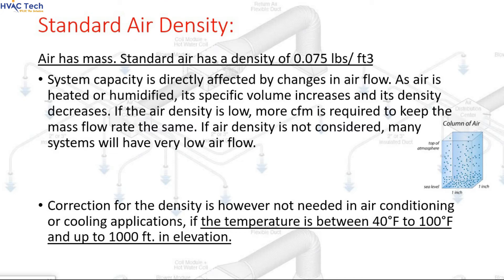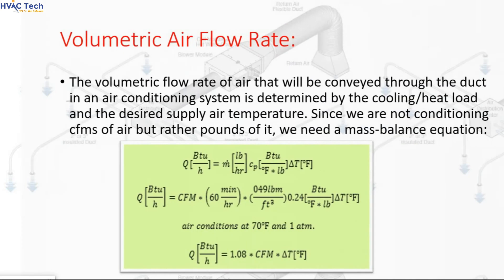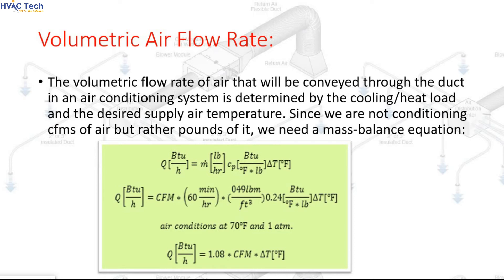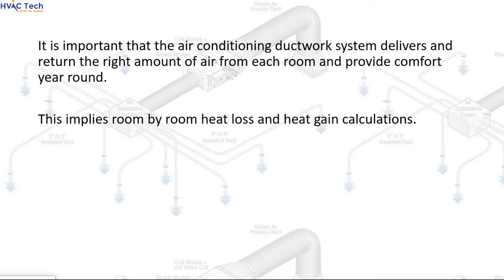Correction for density is not needed in air conditioning or cooling applications if the temperature is between 40°F and 100°F and up to 1,000 feet in elevation. The volumetric flow rate of air conveyed through the duct in an air conditioning system is determined by the cooling/heat load and the desired supply air temperature. Since we are not conditioning CFMs of air but rather pounds of it, we need a mass balance equation. It is important that the ductwork system delivers and returns the right amount of air from each room to provide comfort year-round, implying room-by-room heat loss and heat gain calculations.